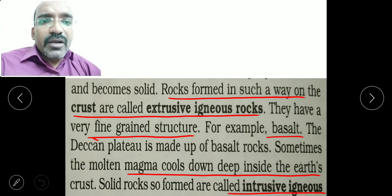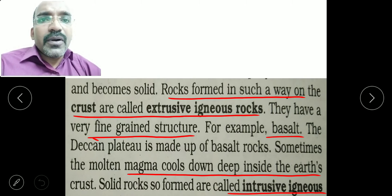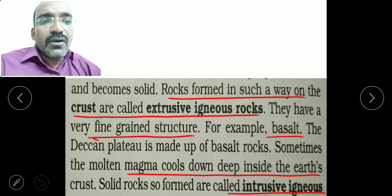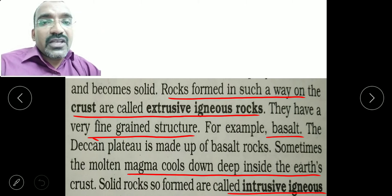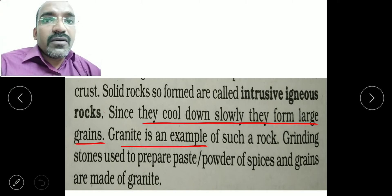Sometimes, molten magma cools down deep inside the earth's crust. These solid rocks are called intrusive rocks. Since they cool down slowly, they form large grains.